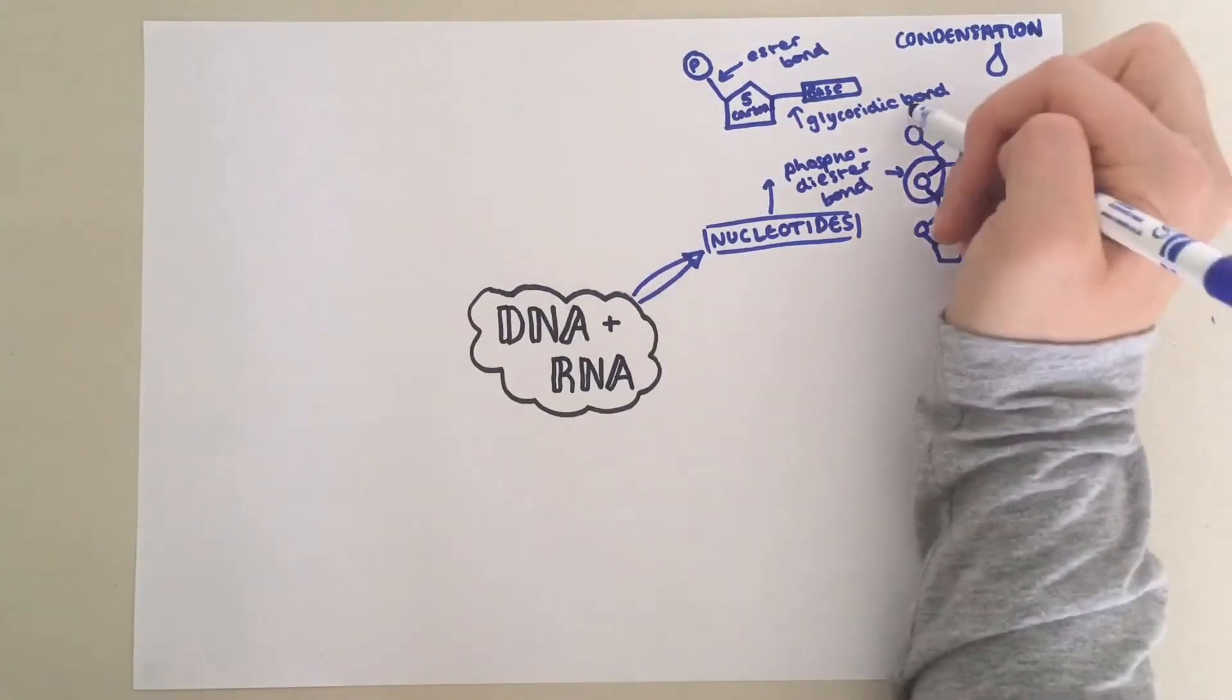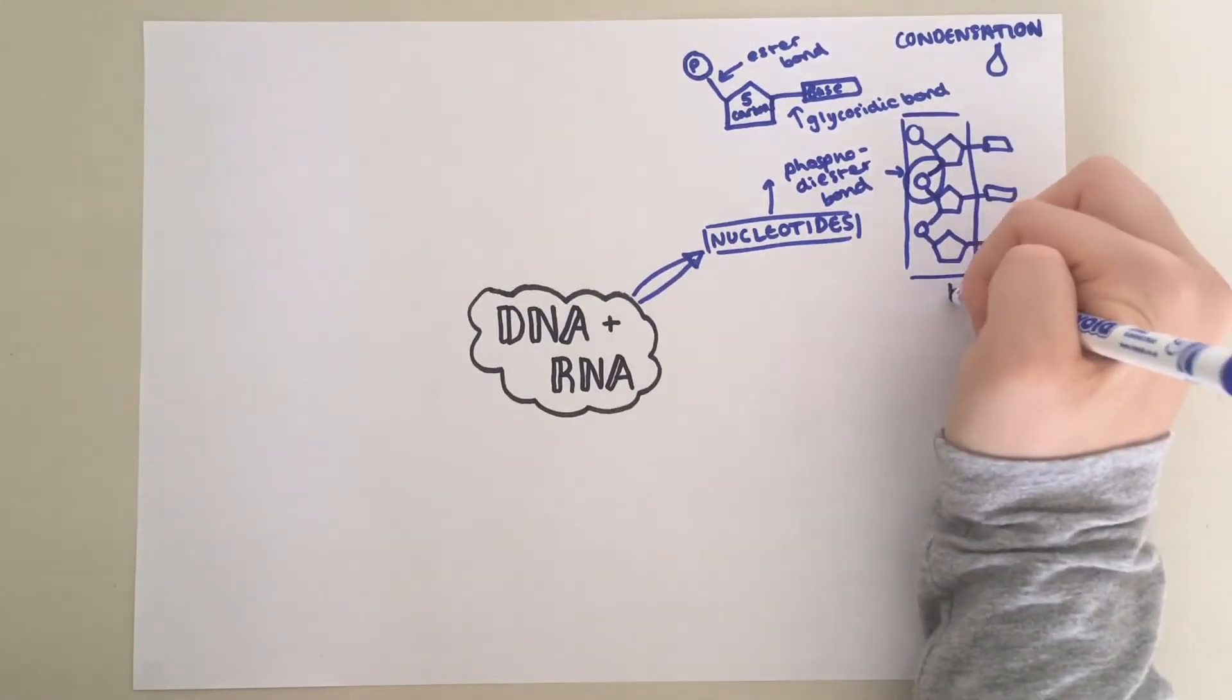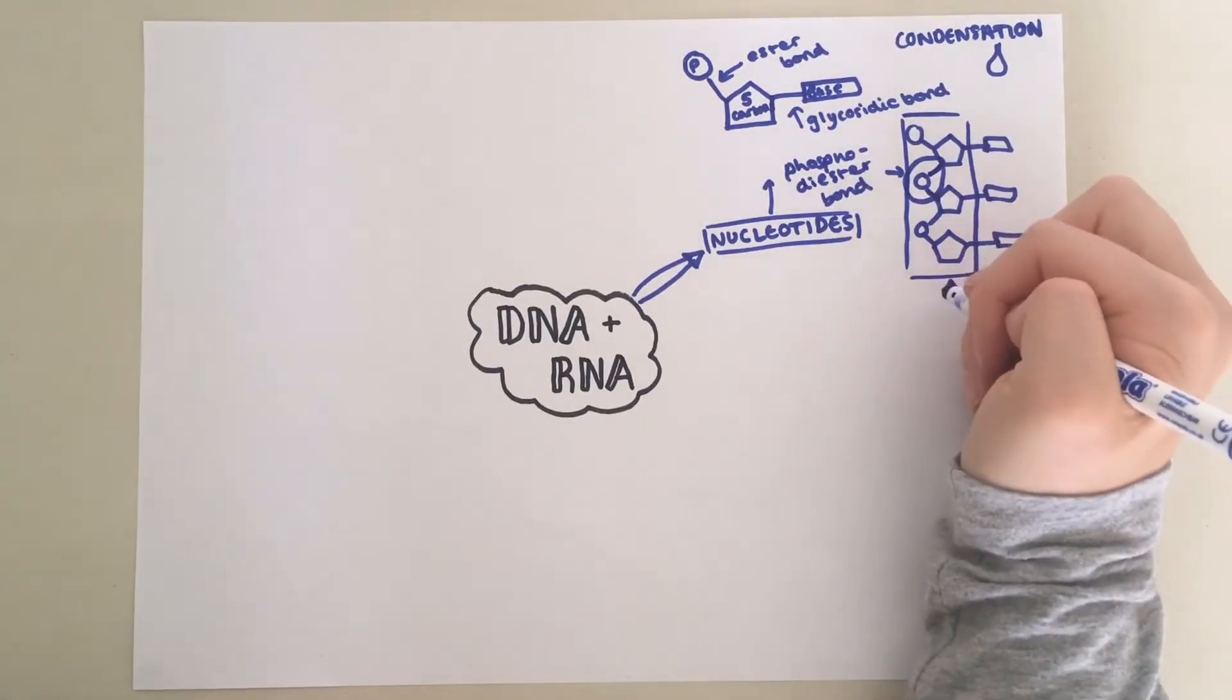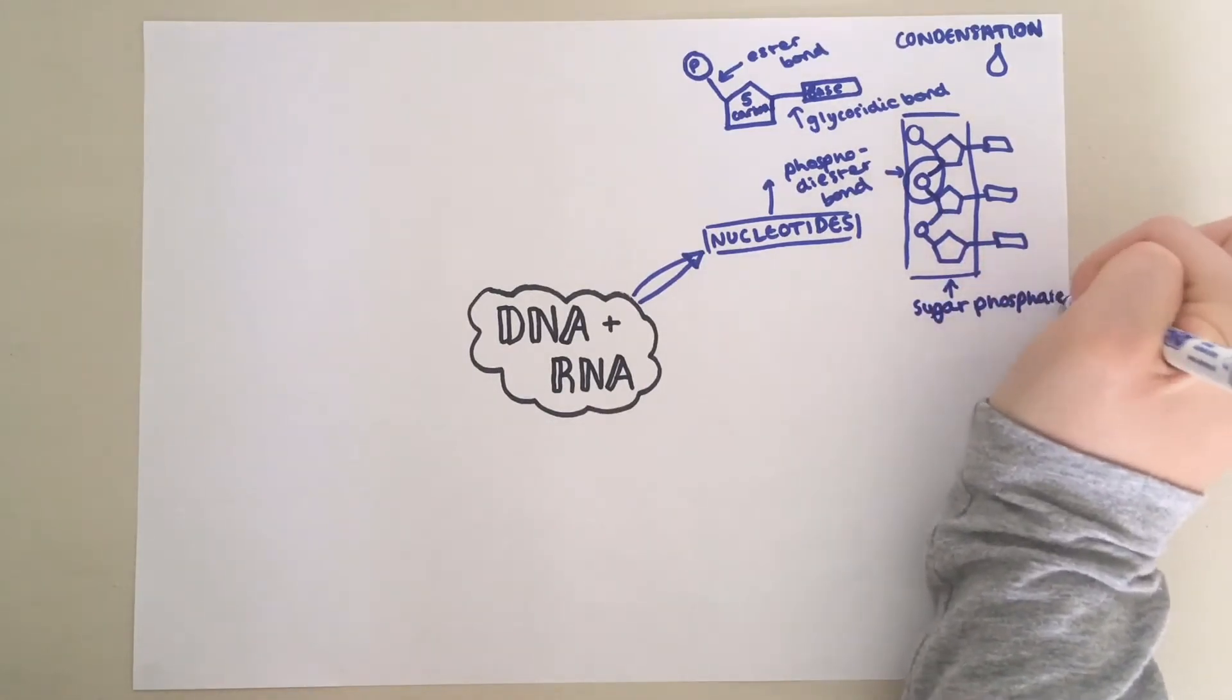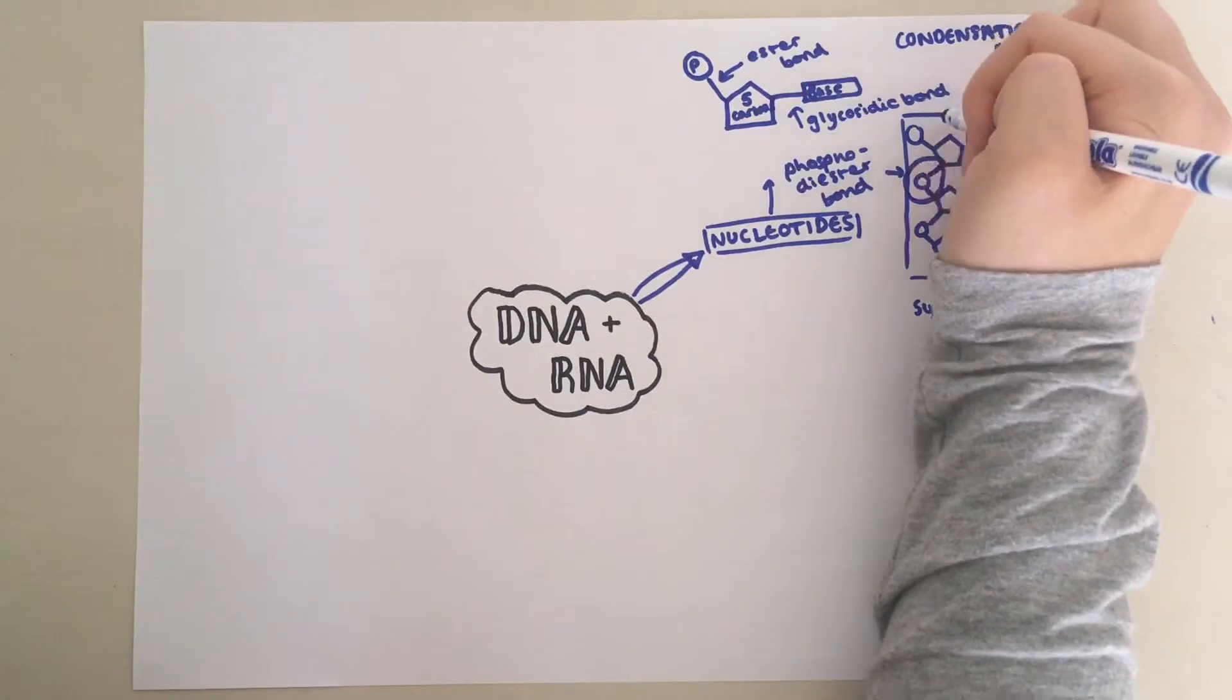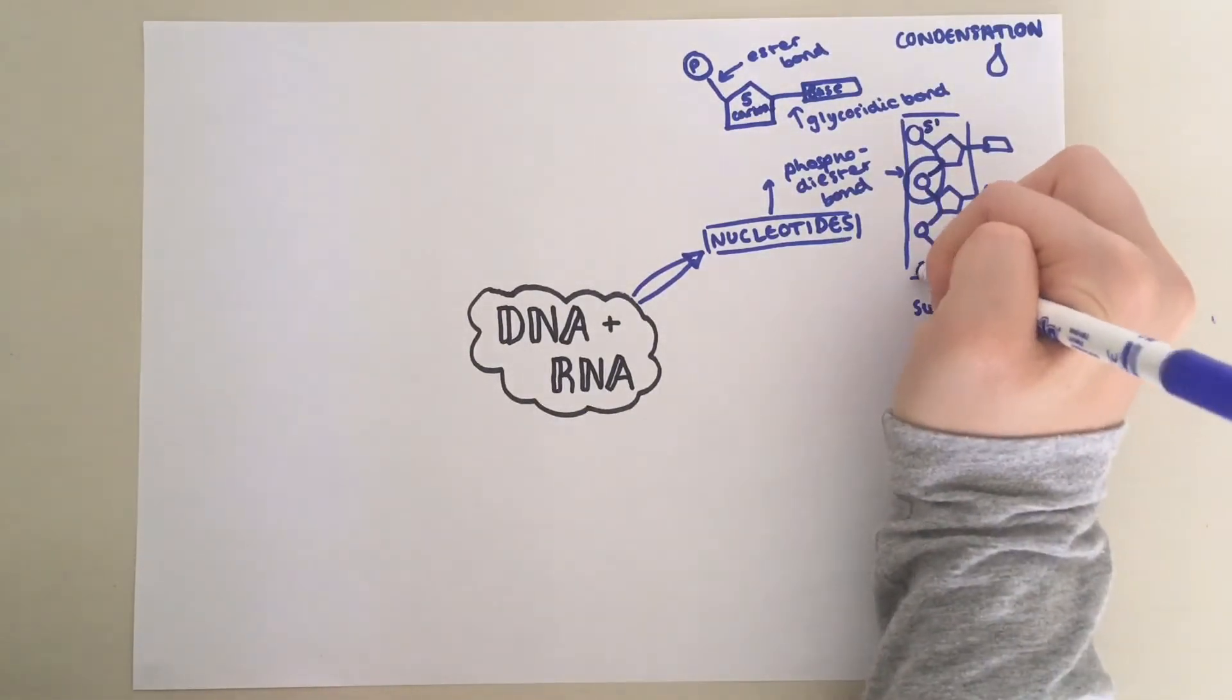This bit here is known as the sugar phosphate backbone, and it helps to provide protection and stability to DNA and RNA molecules. Up here we have the five prime end, and down here we've got the three prime end.